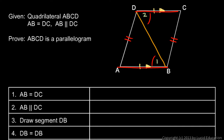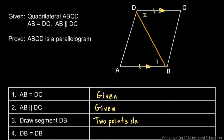We proved earlier that if a quadrilateral has equal opposite sides, then it is a parallelogram. I can use that as a reason without reproducing all those steps. Now for the formal proof: AB equals DC — given. AB is parallel to DC — given. Draw segment DB — two points determine a line. And DB equals DB by the reflexive property.